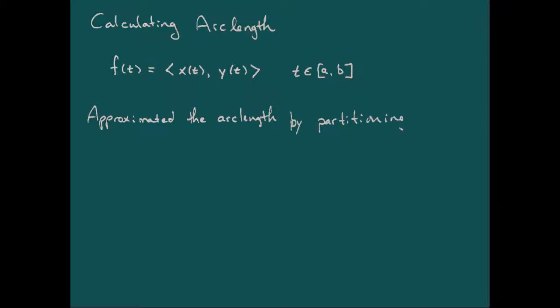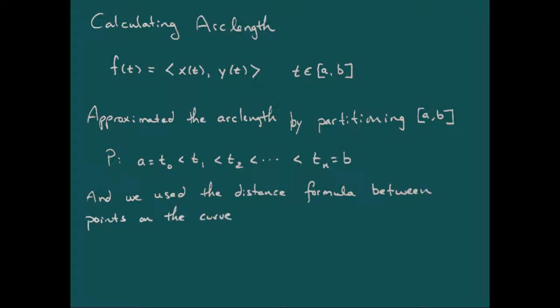Then what we did was exactly akin to what we were doing with total variation. We took a partition of the domain, t0, t1, and that corresponded to points on the curve. And then we looked at the distance formula between those corresponding points. So in two dimensions we had x of t sub k minus x of t sub k minus 1 quantity squared plus y of t sub k minus y of t sub k minus 1 quantity squared. And so that just gave us the distance between consecutive points on our curve.